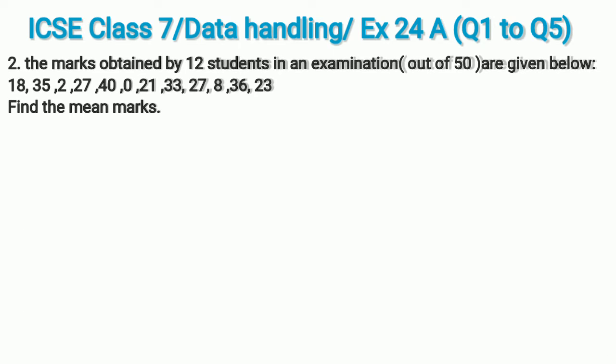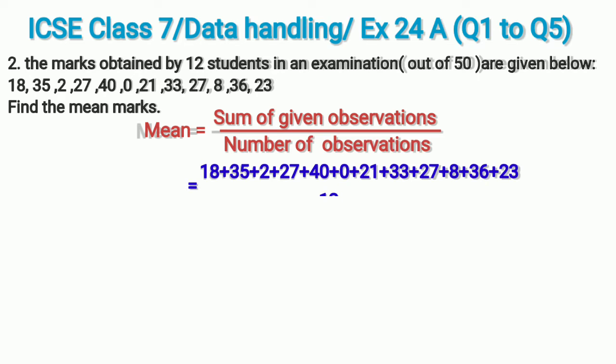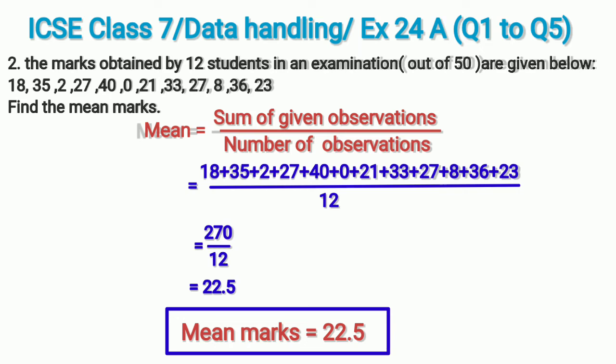In the second question, the marks obtained by 12 students in an examination out of 50 are given. We have to find the mean marks. The formula for mean is sum of given observations divided by number of observations. The numerator is the sum of all marks and the denominator is 12, since there are 12 students. Adding all the marks gives 270, and 270 divided by 12 is 22.5. So the mean marks equals 22.5.